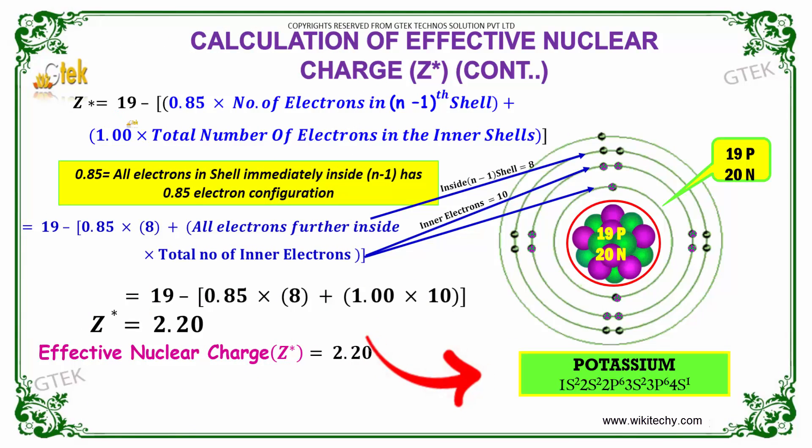The effective nuclear charge is equal to the atomic number minus... The n minus 1 shell is this one. It has 8 electrons. So 8 times 0.85, and the total number of electrons in the inner shells.